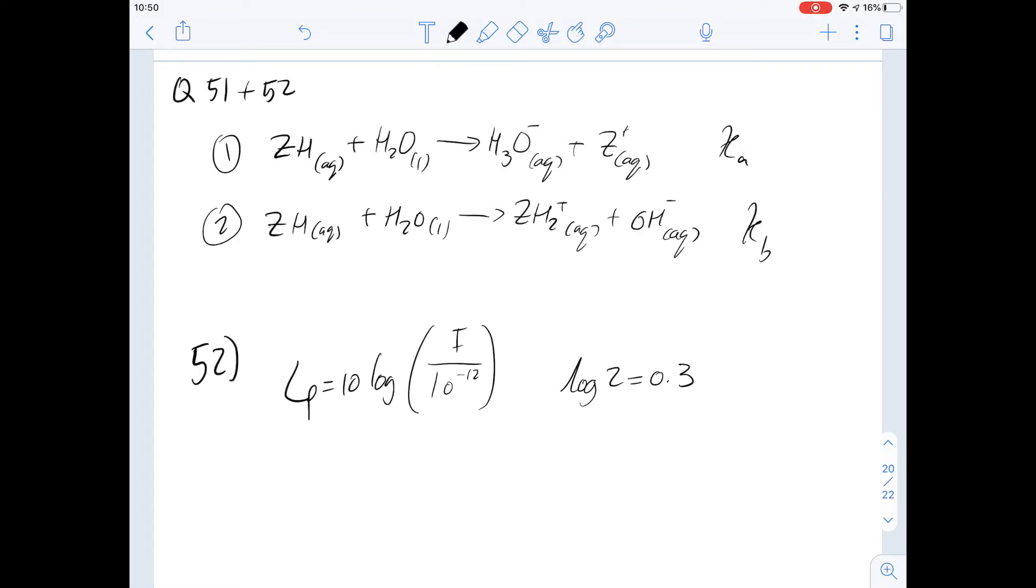This first question is question 51 and it's about amphoteric molecules which can donate and accept hydronium ions. We've been given two reactions here and we've been told what the acidity constant and what the base acidity constant are.